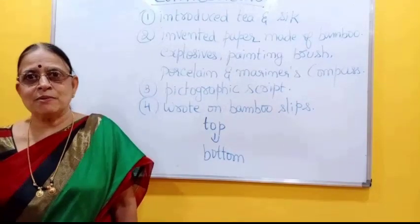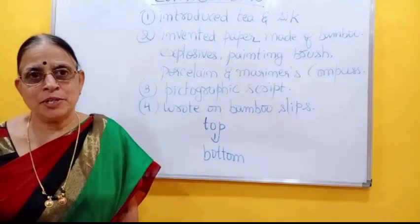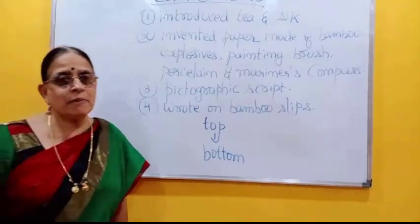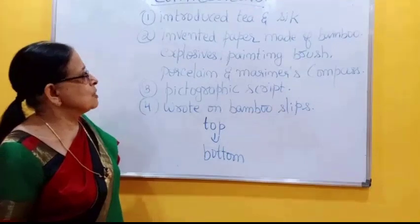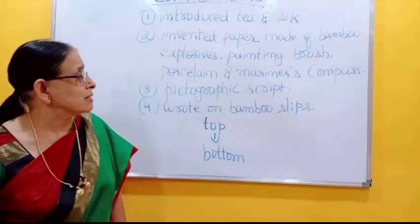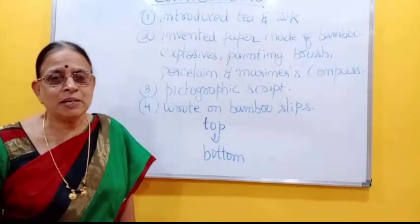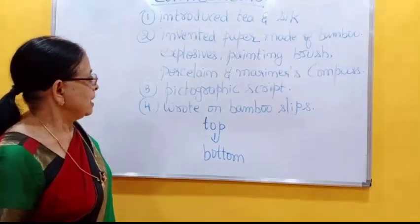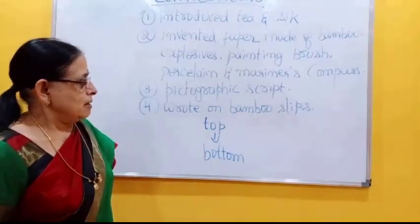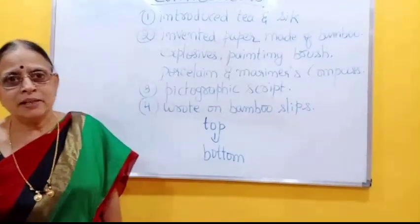Now let us learn about the contributions of ancient China. They introduced tea and silk to the world — they were the first to introduce tea and silk. They invented paper made of bamboo; even today, bamboo is the raw material for the paper industry. They also invented explosives. They developed the painting brush, porcelain, and the mariner's compass — an instrument which shows direction at sea. They introduced pictographic script, where pictures stood for words. They wrote on bamboo slips, making thin slips from bamboo and writing from top to bottom vertically.